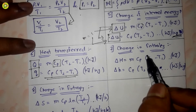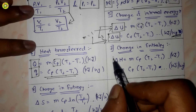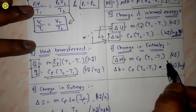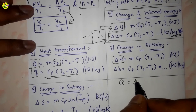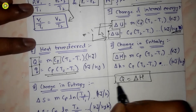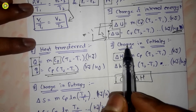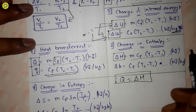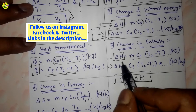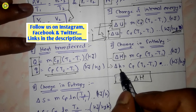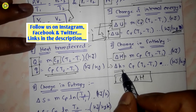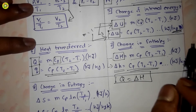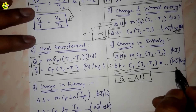The change in enthalpy is denoted by ΔH and equals mCp(T2 − T1). Notably, Q = ΔH, so heat transfer equals the change in enthalpy for a constant pressure process. On a unit mass basis, the change in specific enthalpy is Δh = Cp(T2 − T1) in kilojoule per kg.